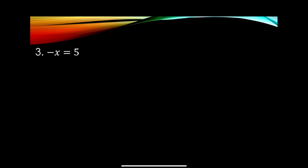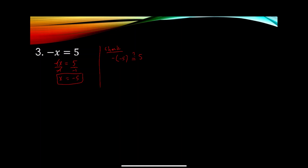Example number 3: what if we have -x = 5? The coefficient for x is not 1, it's -1. So we divide both sides by -1. The left side simplifies to x, and x = 5 / (-1) = -5. Checking: -(-5) = 5, which is correct.